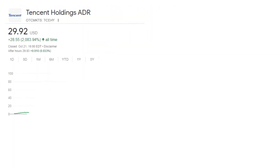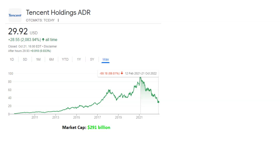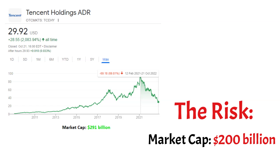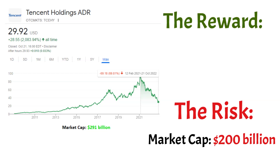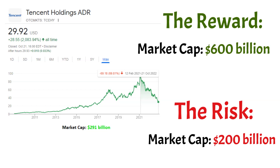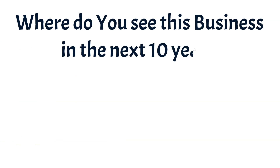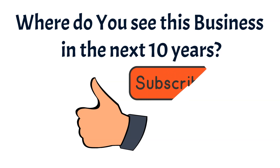The stock price has declined by more than 60%, which is a great opportunity if you like this type of business, because the stock is undervalued. When investing, you have to consider risk and reward. The downside risk is the market cap going to $200 billion if growth slows. The reward could be a double, with market cap around $600 billion, or more than $900 billion if earnings grow strongly. It depends on whether you like this business and the potential return. Tell me in the comments where you see this business in the next 10 years, and if you find value in this video, please give a like and subscribe.